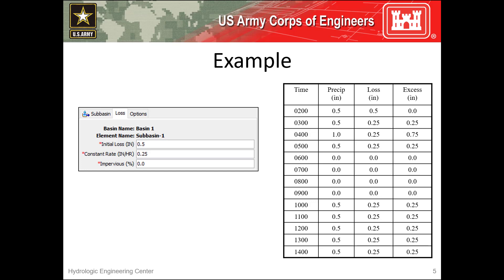When using this method, you're required to apply two parameters: initial loss and constant rate. A directly connected impervious area can also be specified, but it is an optional parameter. However, when a non-zero value for directly connected impervious area is specified, infiltration computations won't be carried out in that portion of the subbasin or grid cells, and all precipitation will become excess.